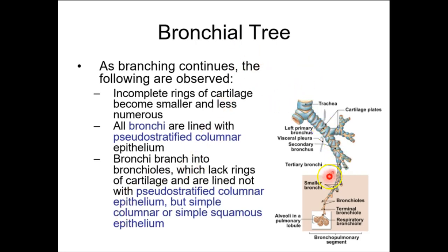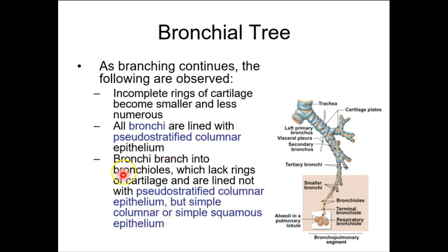As those generations get smaller and smaller, we go from C-shaped cartilaginous rings to incomplete cartilaginous rings to little patches of cartilage. We also go from ciliated pseudostratified columnar to simple columnar all the way down to simple squamous epithelium. The epithelium type changes and it loses those cilia as it transitions. The deeper you get, the less ability you have to push pollutants back up to the trachea. Once we get down to the alveolar level, we can't push it back up anymore.